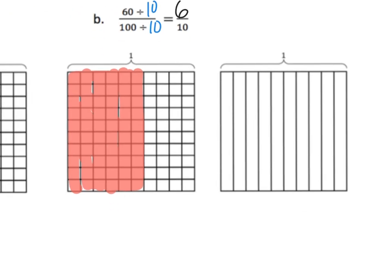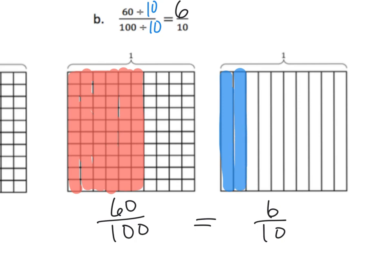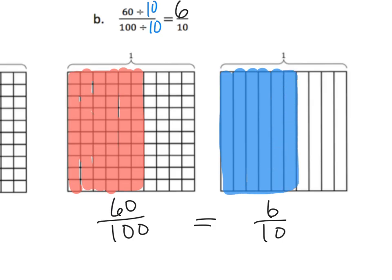We have sixty hundredths and we think it should be equivalent to six tenths. Let's confirm by shading six tenths in blue: one tenth, two tenths, three tenths, four tenths, five tenths, six tenths. We can see that both shadings cover the exact same amount, confirming they are equivalent. That's the power of dividing both the numerator and denominator by ten — you get a new fraction that is equivalent to the original.